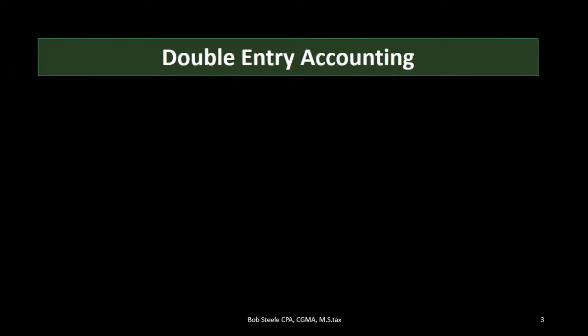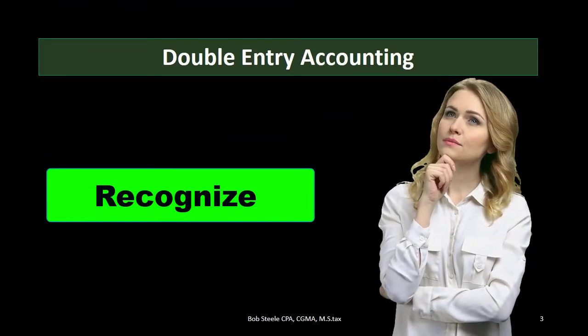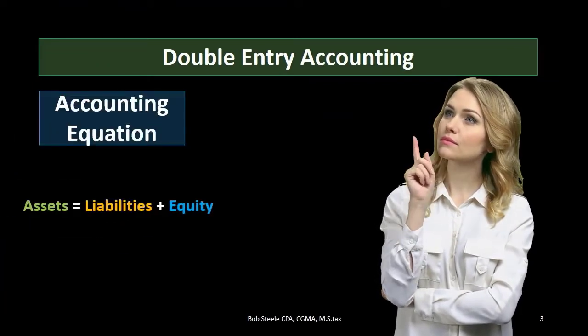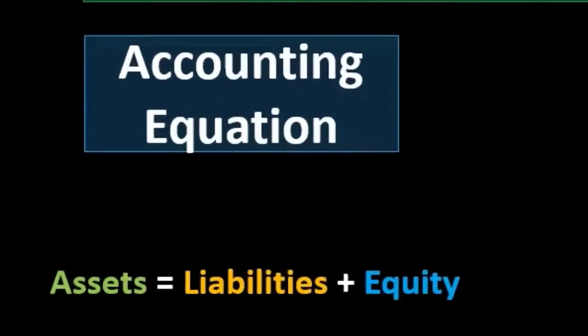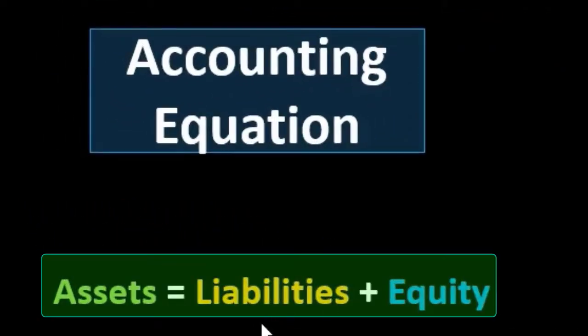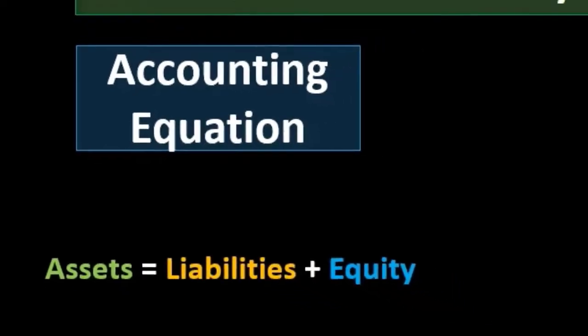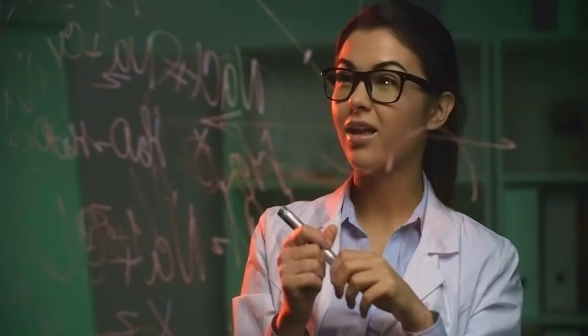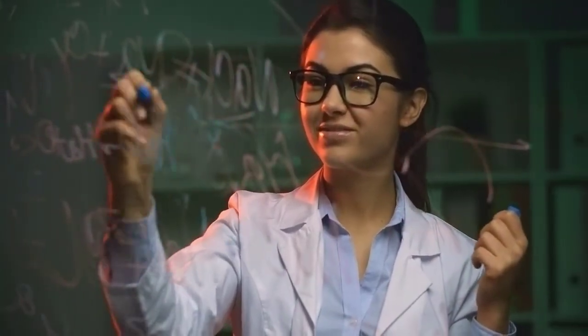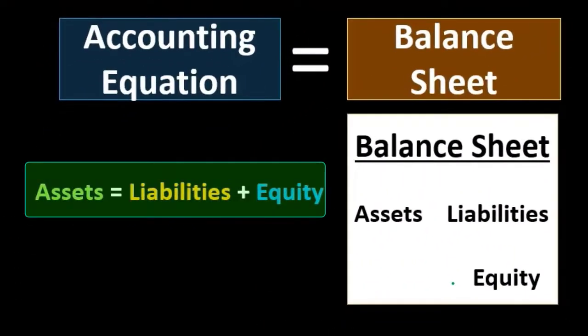First we want to take a look at the double entry accounting system and recognize that it can be represented in multiple different ways, including the accounting equation, meaning that assets equal liabilities plus equity. We can record transactions using this accounting equation as we have done in the past. That accounting equation is the basis behind the balance sheet, where we have the assets, liabilities, and equity representing the fact that the balance sheet would be in balance.